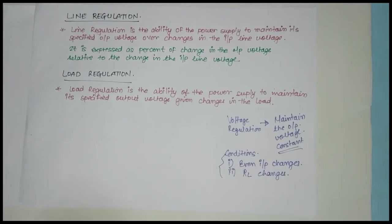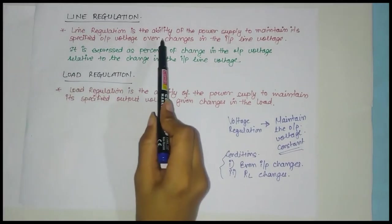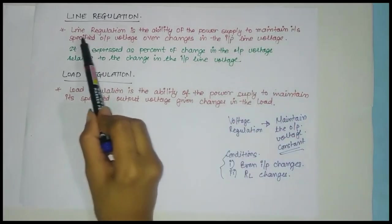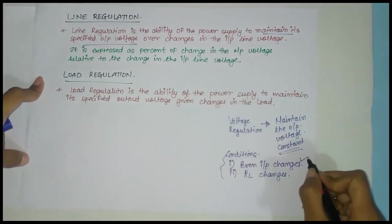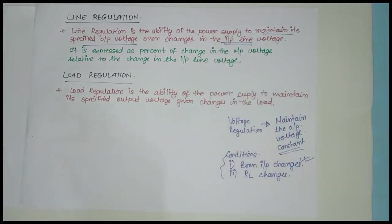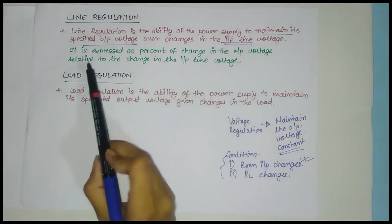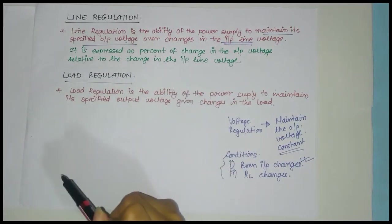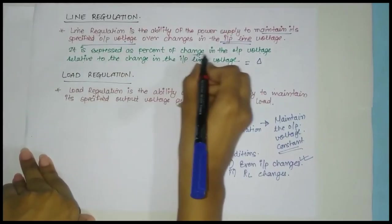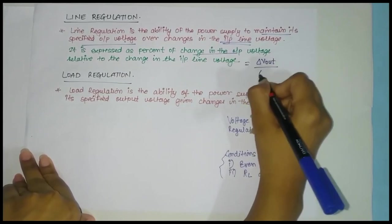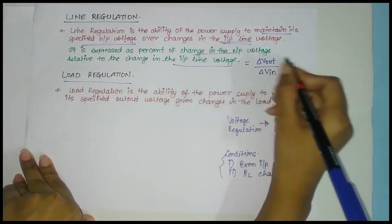These are the two conditions named as line and load regulation. Line regulation is the ability of the power supply to maintain its specified output voltage over changes in the input line voltage — even though the input voltage changes, the output should remain constant. It is expressed as percent change in the output voltage relative to the change in the input line voltage. The expression is: change in output voltage divided by change in input line voltage, multiplied by 100 for percent.